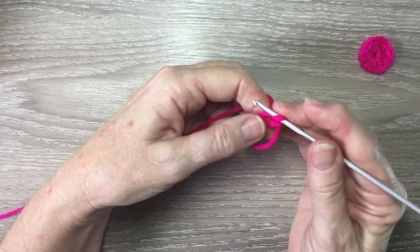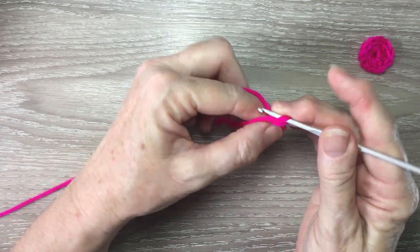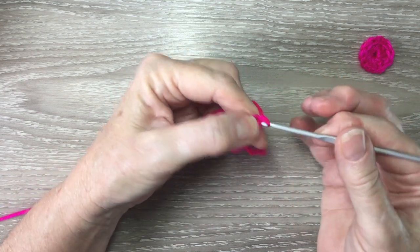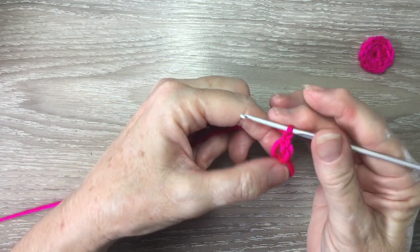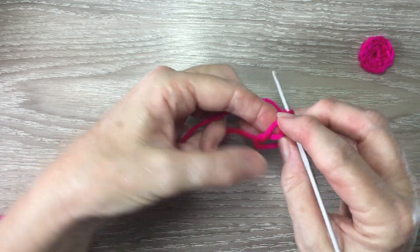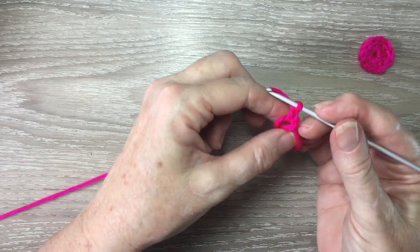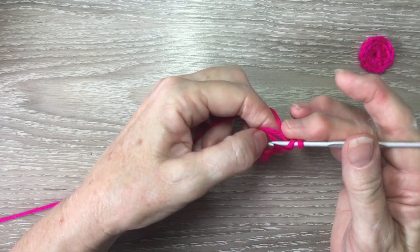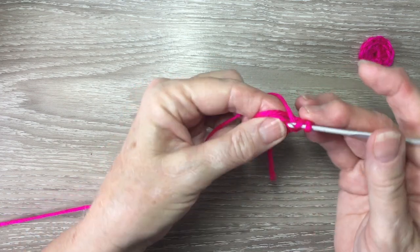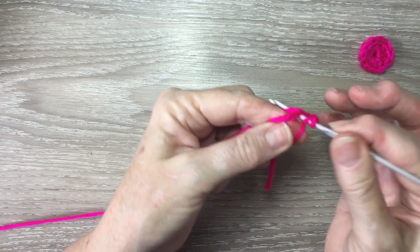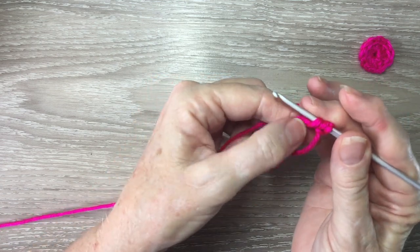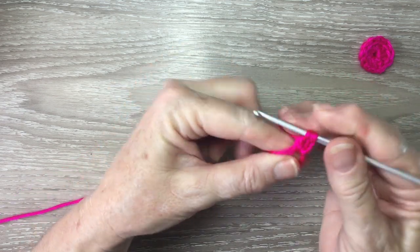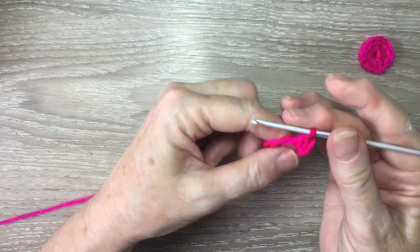Now I'm going to work some double crochet into my circle today. So I'll start with three chain, which is for the first double crochet. Now holding my circle like that quite tight, I'll work my double crochet. I put my hook over the two loops to bring it up, so I'm going to work over those two lots of yarn like that.